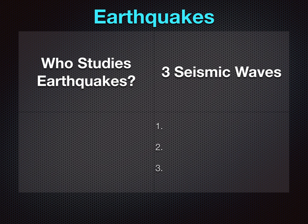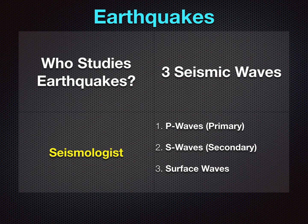The last thing is earthquakes. You need to know three things about earthquakes — two are going to be in your notes: who studies earthquakes, and the three types of seismic waves. Seismic is really important with understanding earthquakes. The person who studies earthquakes is called a seismologist — a person who studies seismic waves. Any earthquake is made by seismic waves, so if you see 'seismic wave,' it means earthquake waves. You have three types of seismic waves: P waves, which are primary — the first. S waves, which are secondary — the second. And surface waves, which are the waves you see as a result of the earthquake. A seismologist uses a seismograph to study seismic waves, hence why all three of those words go together.